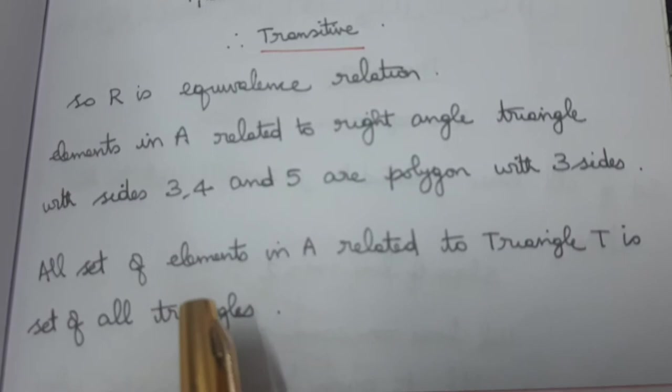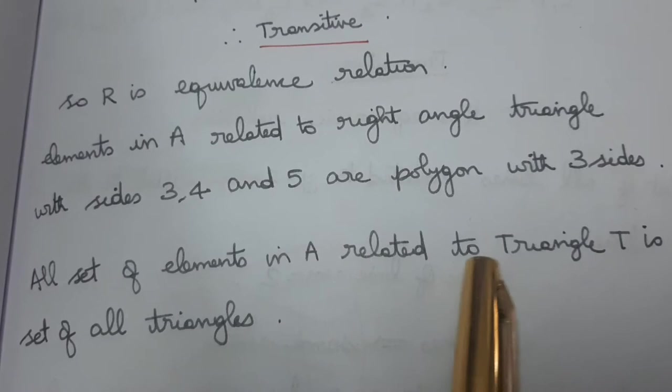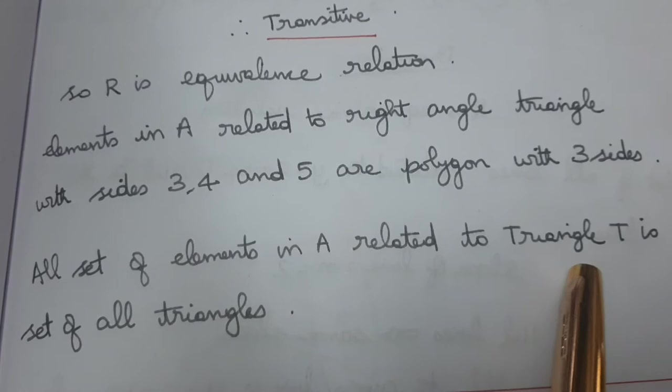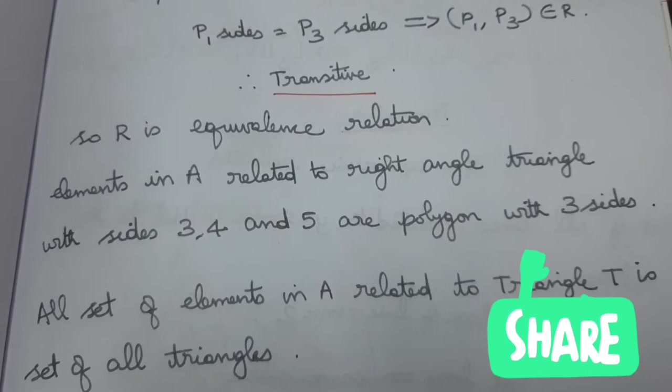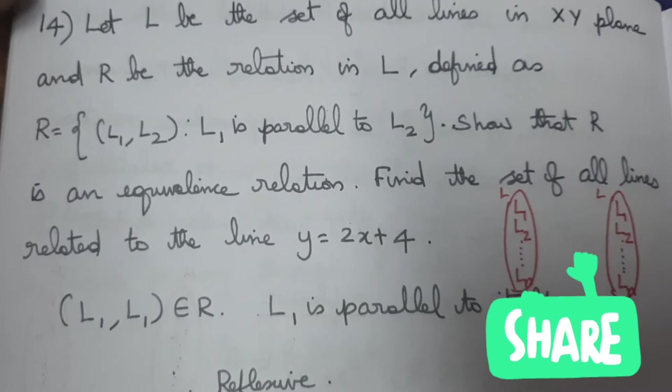Therefore the function is an equivalence relation. For the second substitution: the right-angle triangle with sides 3, 4, 5 has 3 sides. The set of all elements related to this triangle is the set of all triangles, since our relation requires equal number of sides — and all triangles have 3 sides.